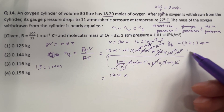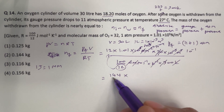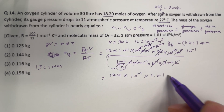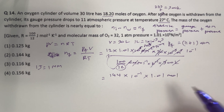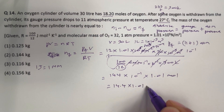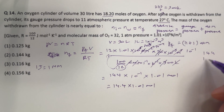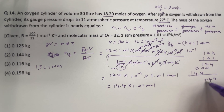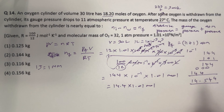Therefore, eventually what remains is 144 times 10 to the power minus 1 times 1.01 moles. This equals 14.4 times 1.01 moles. Multiplying 14.4 by 1.01 gives 14.544 moles, which is our final number of moles.